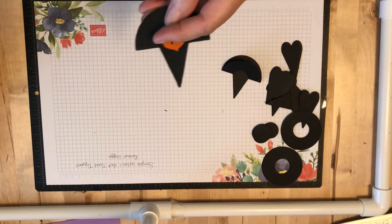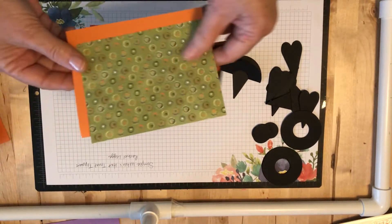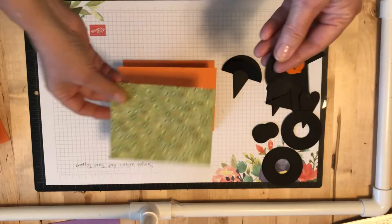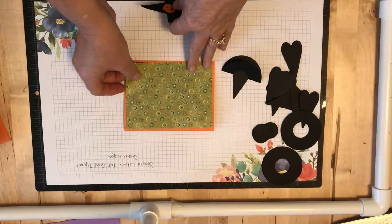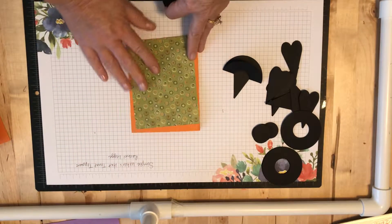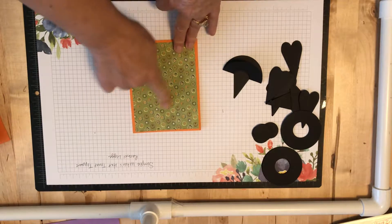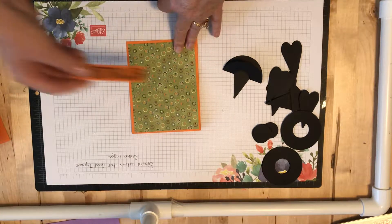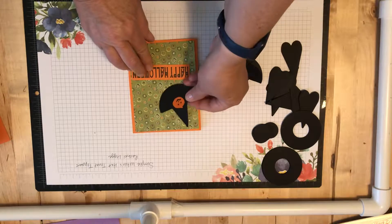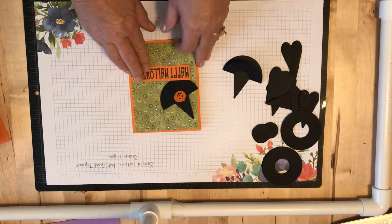So then what can you do with this? Well you can take some designer paper. I'll make this one go this way. This is some old Halloween paper I had. You can stamp a happy Halloween and put your hat on there. That makes a really cute card.